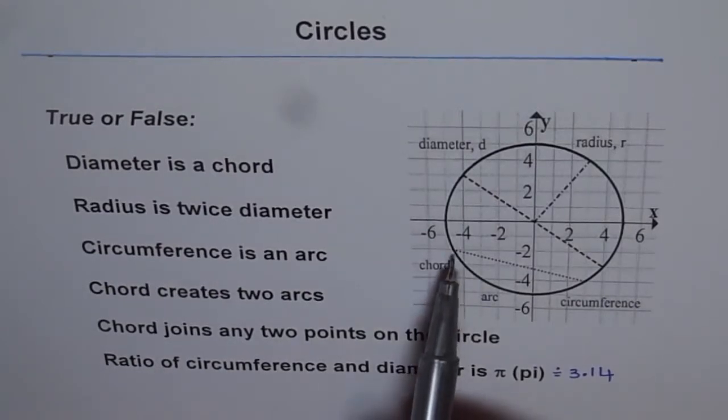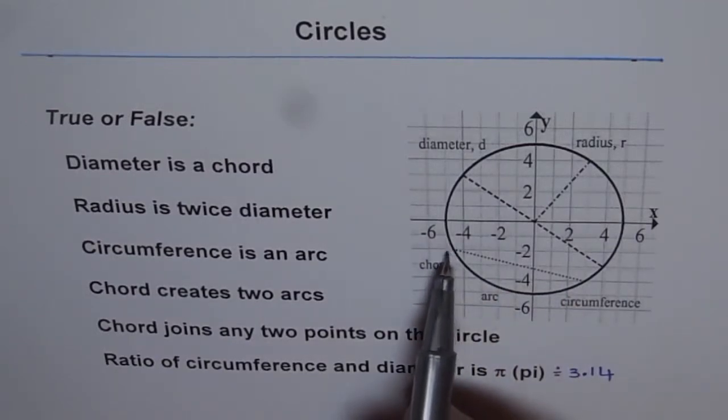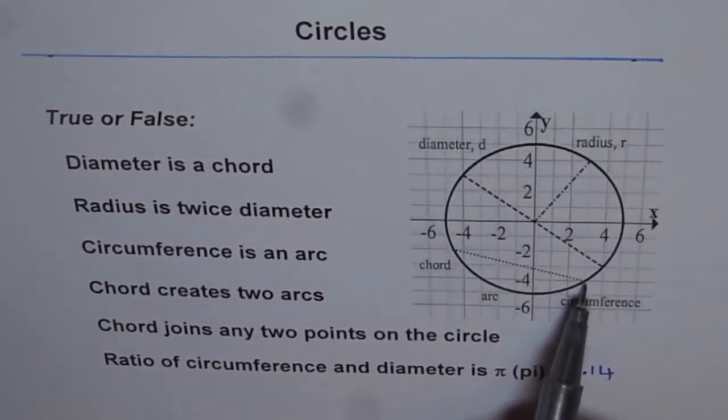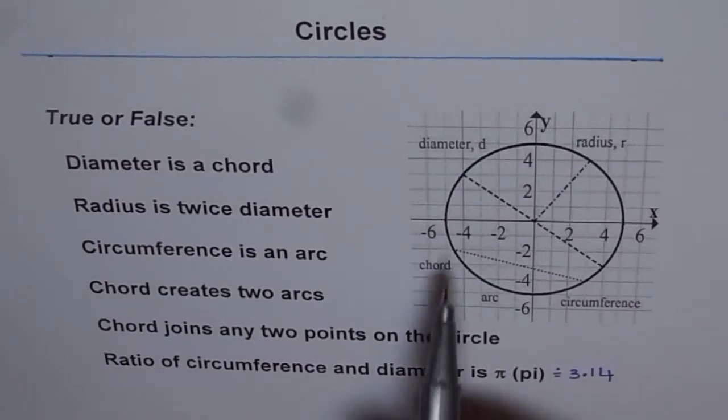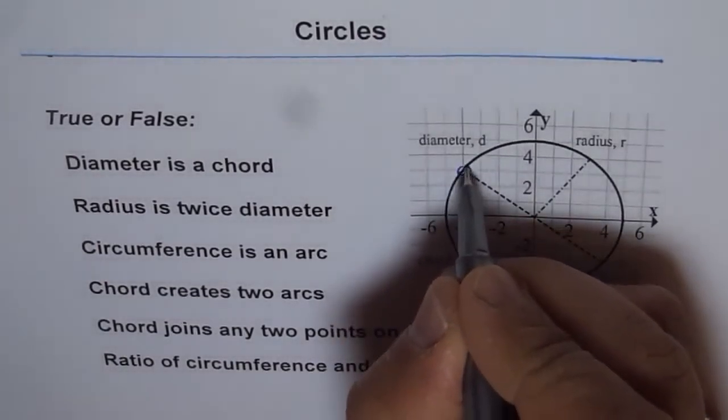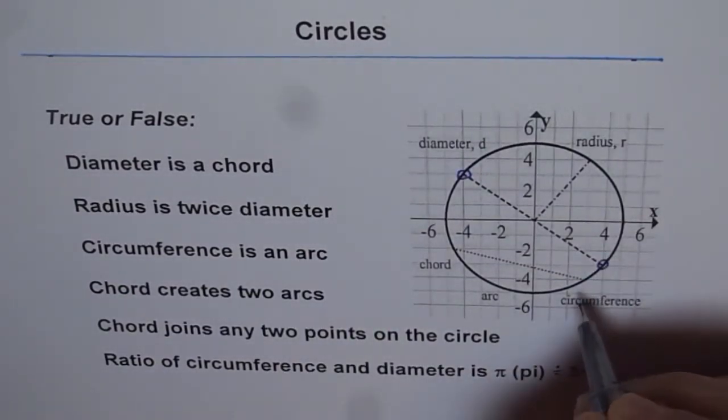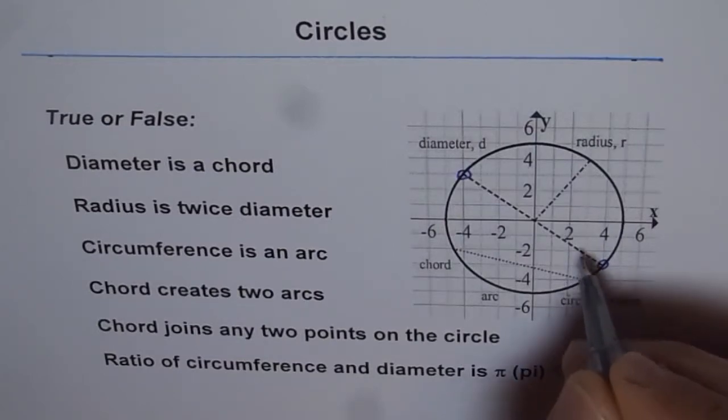Diameter is a chord. So chord is any point joining two ends. Both the points, the ends of the chord, should be on the circumference of the circle. Now if you look at the diameter, let's say this is the diameter. So if this is the diameter, the ends are on the circle, and therefore this is also a chord. In fact, this is the longest chord in the circle. So diameter is a chord is a true statement.